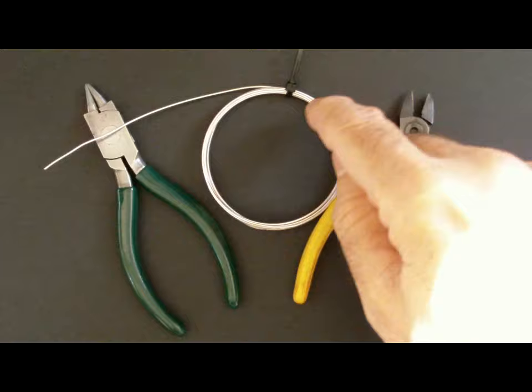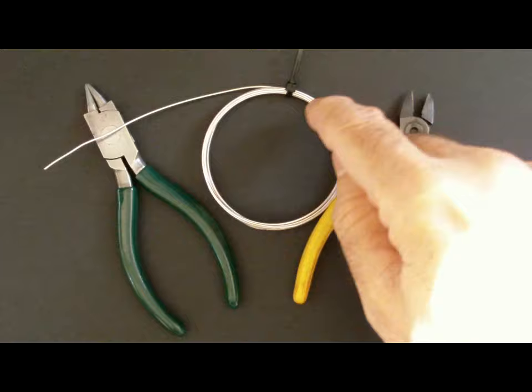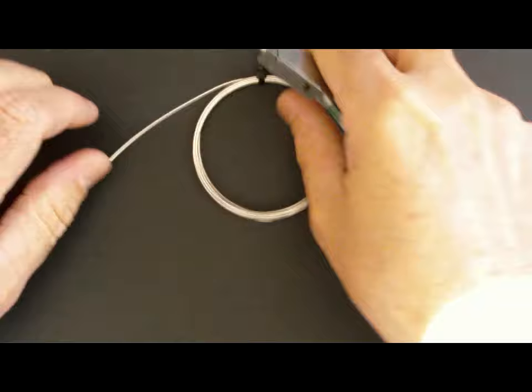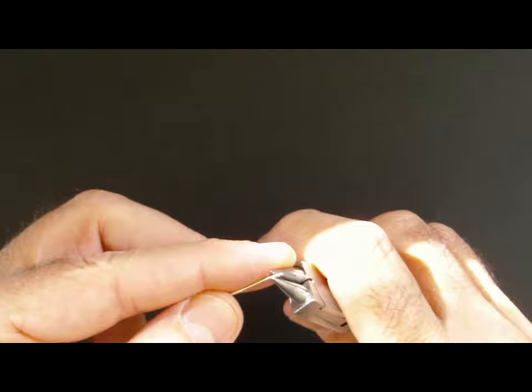On the left here we have a pair of long nose pliers, on the right we have a pair of side cutters, and in the middle we have the roll of wire. In this case, silver-plated wire, but it can be any type of wire. 18 gauge or one millimeter is usually about the best thickness that I find.